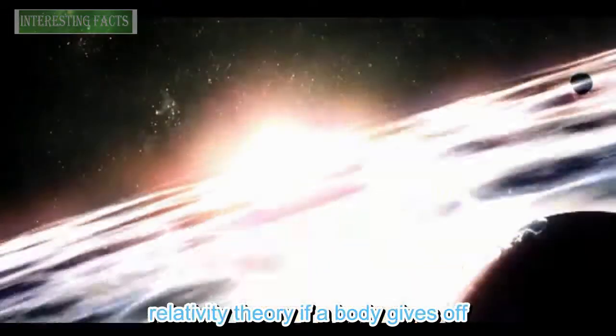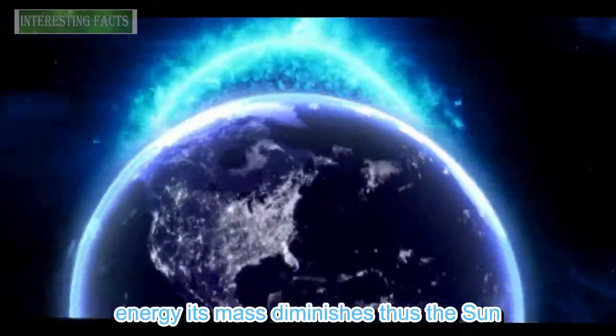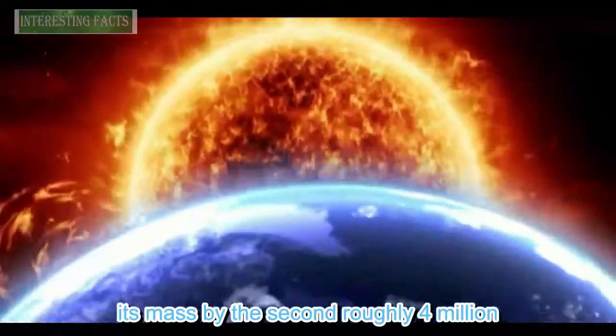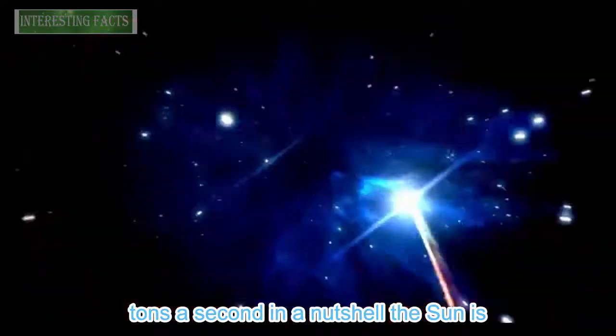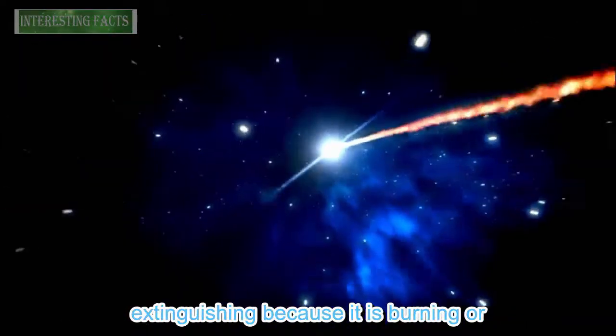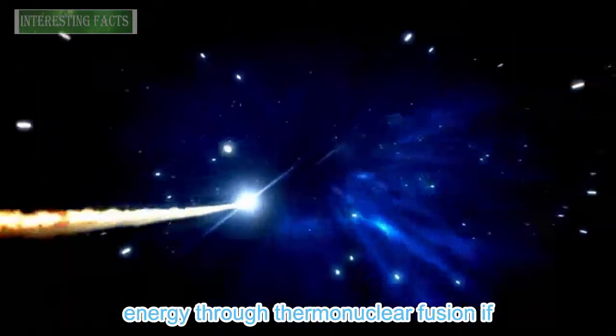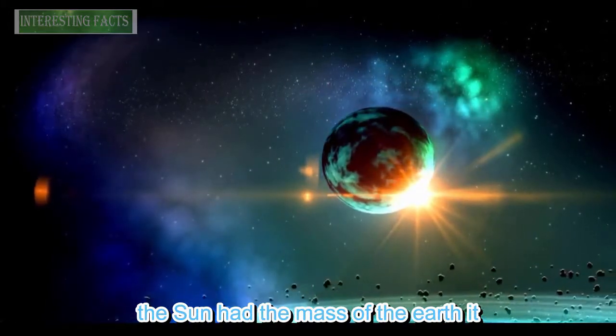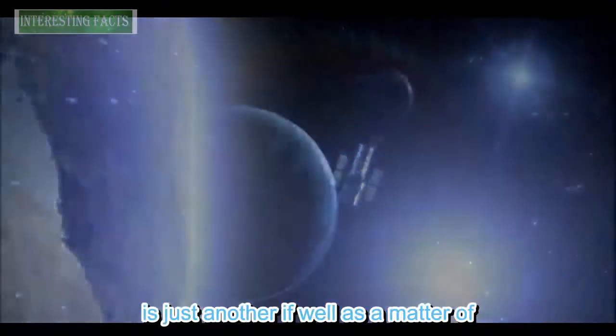According to relativity theory, if a body gives off energy its mass diminishes. Thus the sun, like a runner on a treadmill, is losing its mass by the second, roughly 4 million tons a second. In a nutshell, the sun is extinguishing because it is burning, or speaking more accurately, it produces energy through thermonuclear fusion. If the sun had the mass of the earth, it would burn out in 50,000 years.